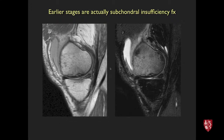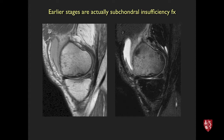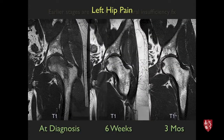Earlier in the disease process, patients present with extensive and painful marrow edema and subchondral serpentine or curvilinear low-signal lines representing the fracture. We now call this a subchondral insufficiency fracture and recommend limited weight bearing with careful follow-up to prevent collapse and flattening of the subchondral bone.